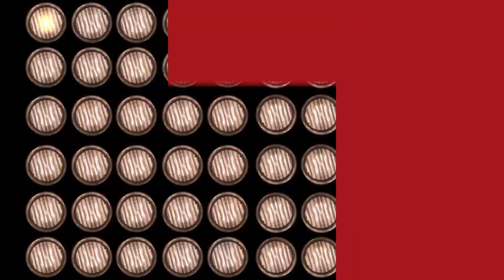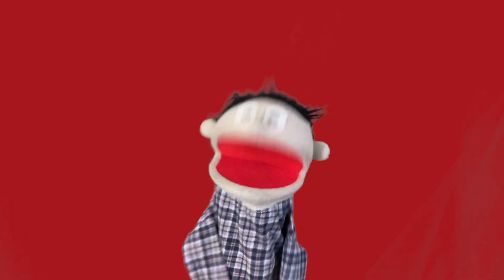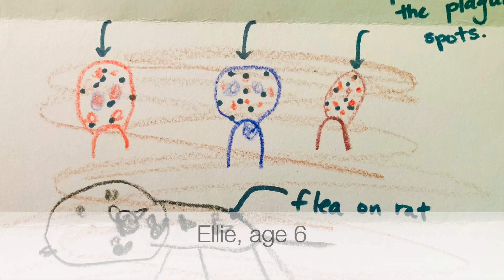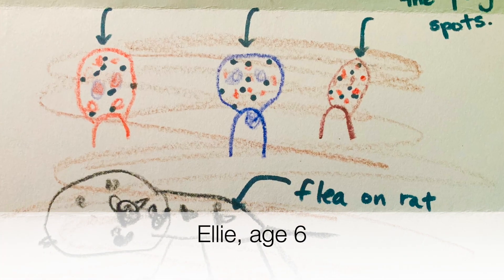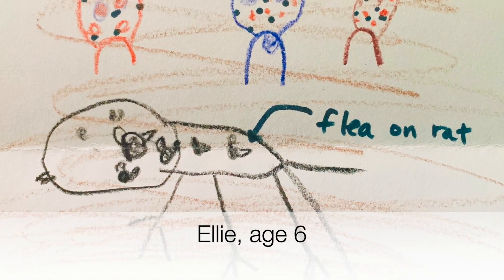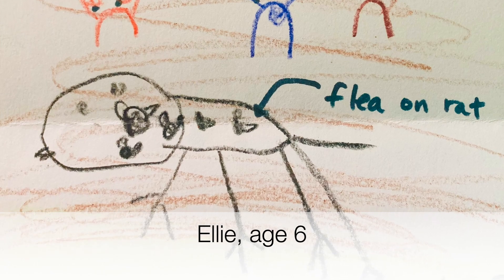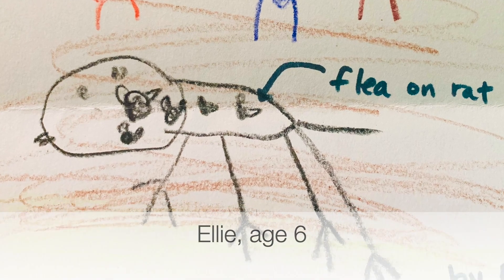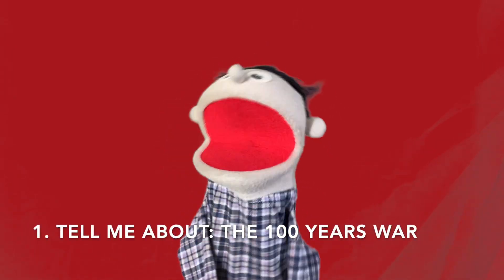We are going to start out with a history question. Check out this picture drawn by Ellie — she's six years old and she drew people with the plague. Wow, that's so neat! Thanks Ellie for the picture. Okay, tell me about the Hundred Years War.